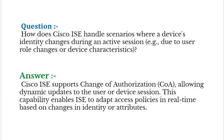Interview question: How does Cisco ISE handle scenarios where a device's identity changes during an active session, for example due to user role changes or device characteristics? Answer: Cisco ISE supports Change of Authorization (CoA), allowing dynamic updates to the user or device session. This capability enables ISE to adapt access policies in real-time based on changes in identity or attributes.